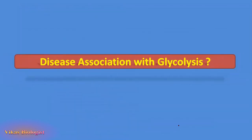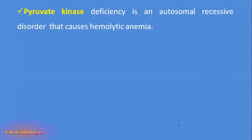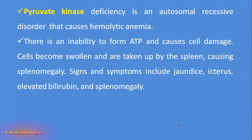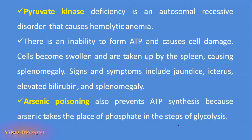Is there any disease association with glycolysis? Yes. Looking at the enzyme pyruvate kinase, the deficiency is an autosomal recessive disorder that causes hemolytic anemia. There is an inability to form ATP and cell damage occurs during this disorder. Cells become swollen and are taken up by the spleen causing splenomegaly. The signs and symptoms include jaundice, icterus, elevated bilirubin, and splenomegaly. Arsenic poison also prevents ATP synthesis because arsenic takes the place of phosphate in the steps of glycolysis.